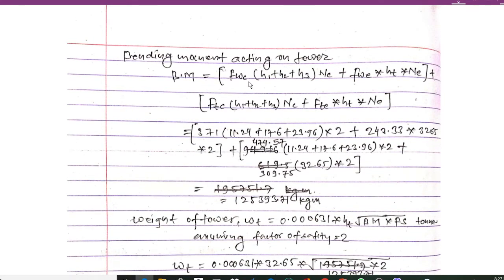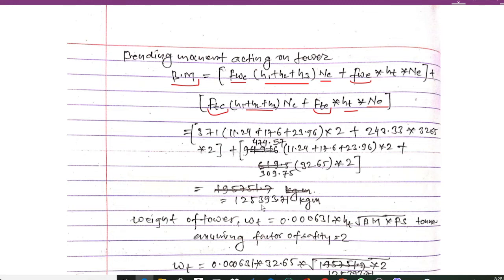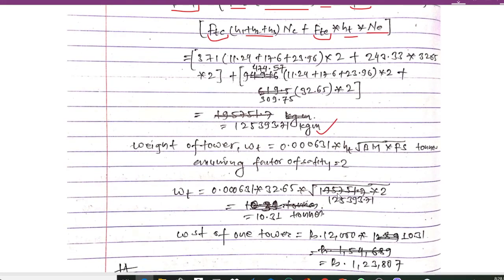The bending moment acting on the tower is: BM = FWC × (H1 + H2 + H3) × NC + FWE × (H1 + H2 + H3) × NC + FTC × (H1 + H2 + H3) × NC + FTE × ST × NE. Substituting all obtained and given values, the bending moment = 125393.7 kg·m.